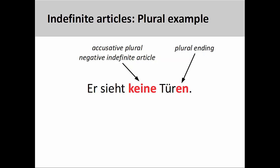However, the noun in this sentence does have a plural ending, which means that keine would be accusative plural — he sees no doors, or he doesn't see any doors.